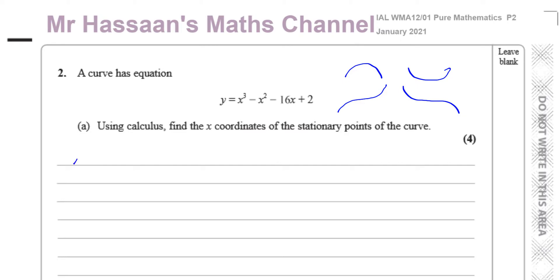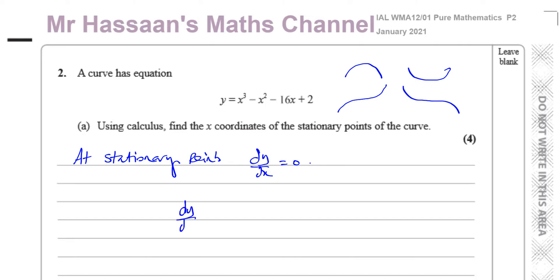At the stationary points, we can say that the gradient dy/dx is equal to zero. So the first thing we need to do is find dy/dx. We take the function and differentiate it.